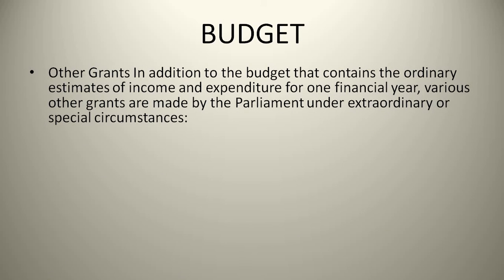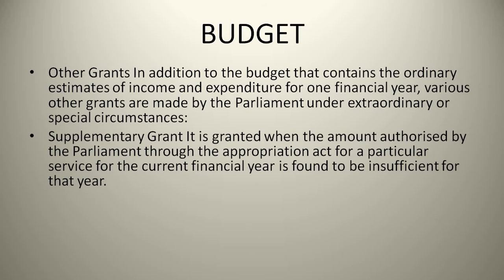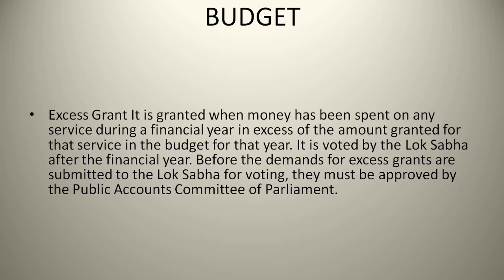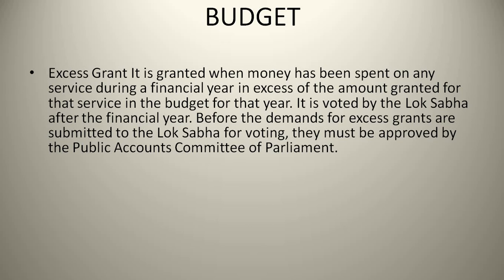Other grants: In addition to the budget that contains the ordinary estimates of income and expenditure for one financial year, various other grants are made by Parliament under extraordinary or special circumstances. Supplementary Grant is granted when the amount authorized by Parliament through the Appropriation Act for a particular service for the current financial year is found to be insufficient. Additional Grant is granted when a need has arisen during the current financial year for additional expenditure upon some new service not contemplated in the budget for that year. Excess Grant is granted when money has been spent on any service during a financial year in excess of the amount granted for that service in the budget. It is voted by the Lok Sabha after the financial year. Before demands for excess grants are submitted to the Lok Sabha for voting, they must be approved by the Public Accounts Committee of Parliament.